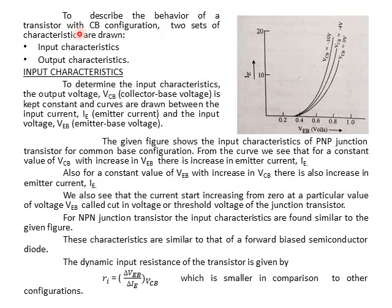To describe the behavior of a transistor with CB configuration, two sets of characteristics are drawn: Input Characteristics (निवेशी अभिलाक्षणिक) and Output Characteristics (निर्गम अभिलाक्षणिक). To determine the input characteristics, the output voltage VCB is kept constant and curves are drawn between the input current IE and the input voltage VEB.